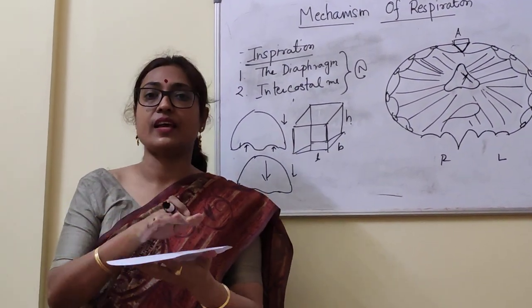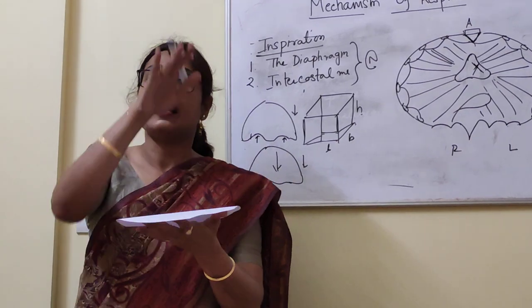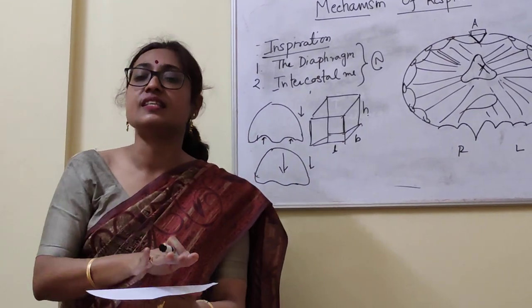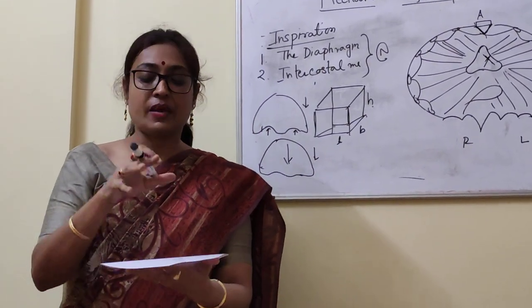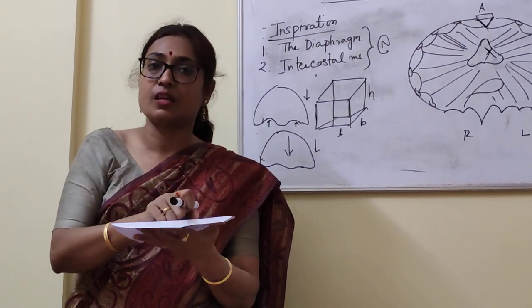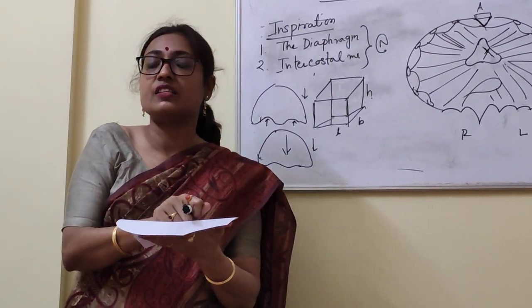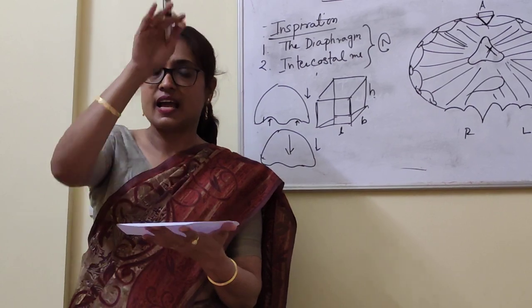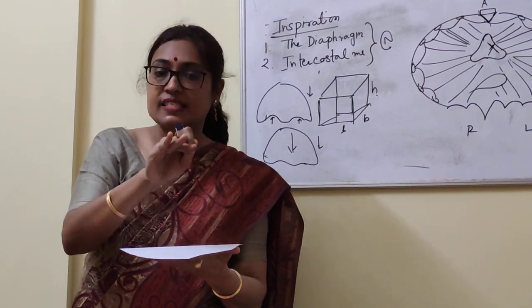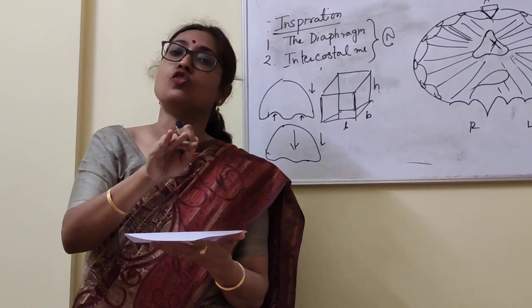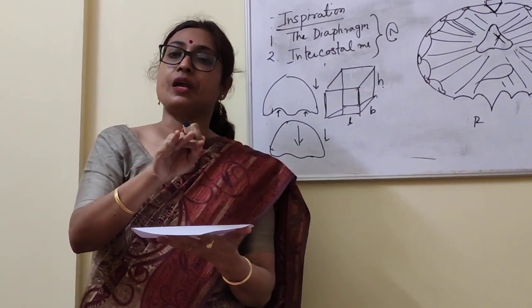In the first phase, the central tendon is contracting and there is descent of the dome of the diaphragm, thereby increasing the height. Normally in quiet breathing, the diaphragm descends 1.5 centimetres. In case of forceful inspiration, it can descend from 6 to 10 centimetres.